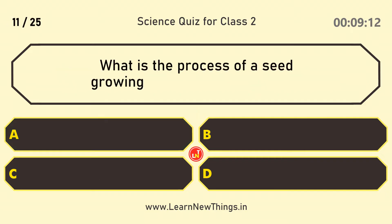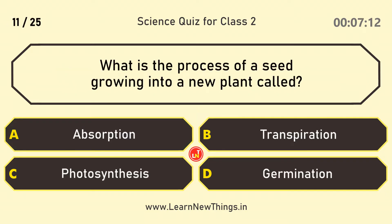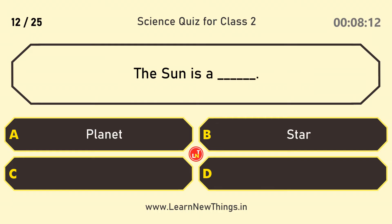What is the process of a seed growing into a new plant called? Germination. The sun is a — Star.